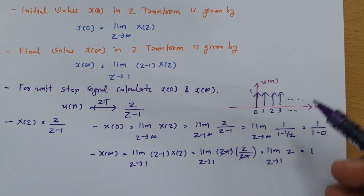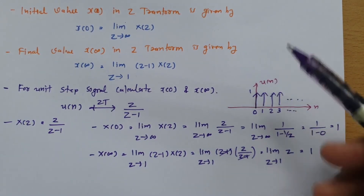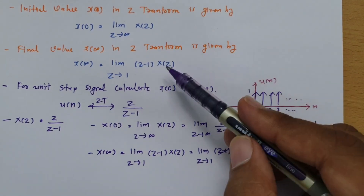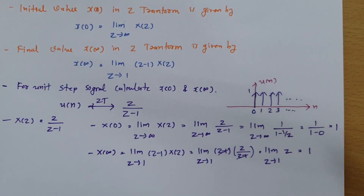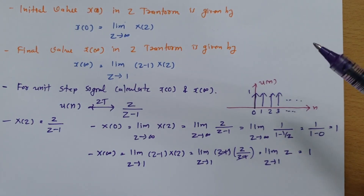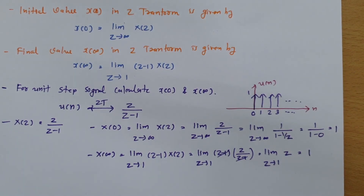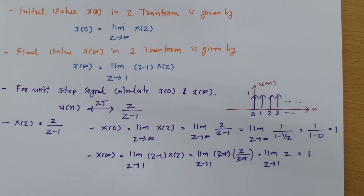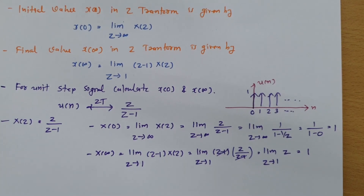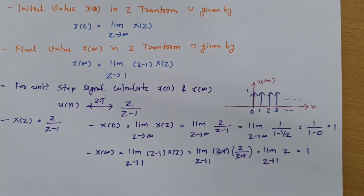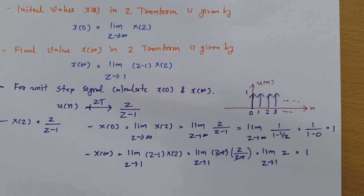Likewise, we can solve for the initial value and final value using these two formulas in any case where the Z-transform of a signal is given. This is how we use Z-transform to solve initial and final value problems. Thank you so much for watching. I hope you have understood this session — please do give your valuable suggestions, and based on them I will make future videos addressing your queries.